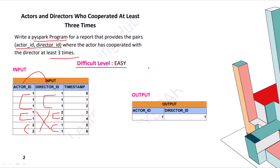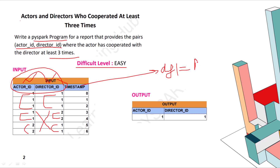So let me tell you the scenario. First, we should have a data frame containing the input data. We are required to do a group by on the actor ID and director ID columns and get the count. So your first data frame, df1, will have actor ID as the first column, director ID as the second column, and the third will be the count.